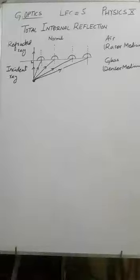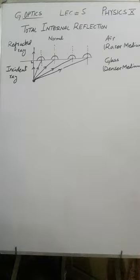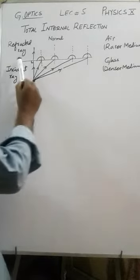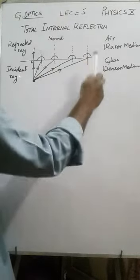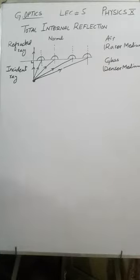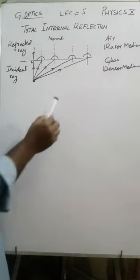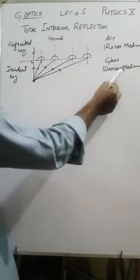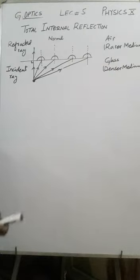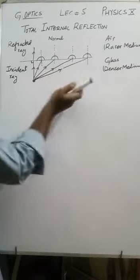Physics class 10, chapter: Geometrical Optics, lecture number 5, topic: Total Internal Reflection. This diagram shows a line representing a boundary. Above this line is air, and below this line is glass. Glass is considered a denser medium — denser means heavier — and air is a rarer medium, meaning lighter.